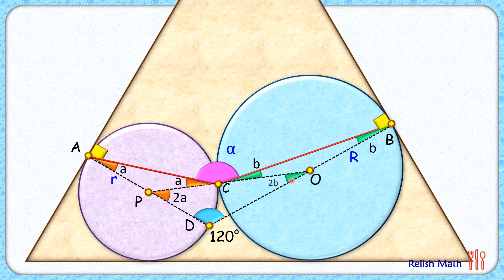Now in this triangle PDO, applying angle sum property, so we get 2A plus 2B plus 120 is 180. Simplifying it we'll get A plus B as 30 degrees.